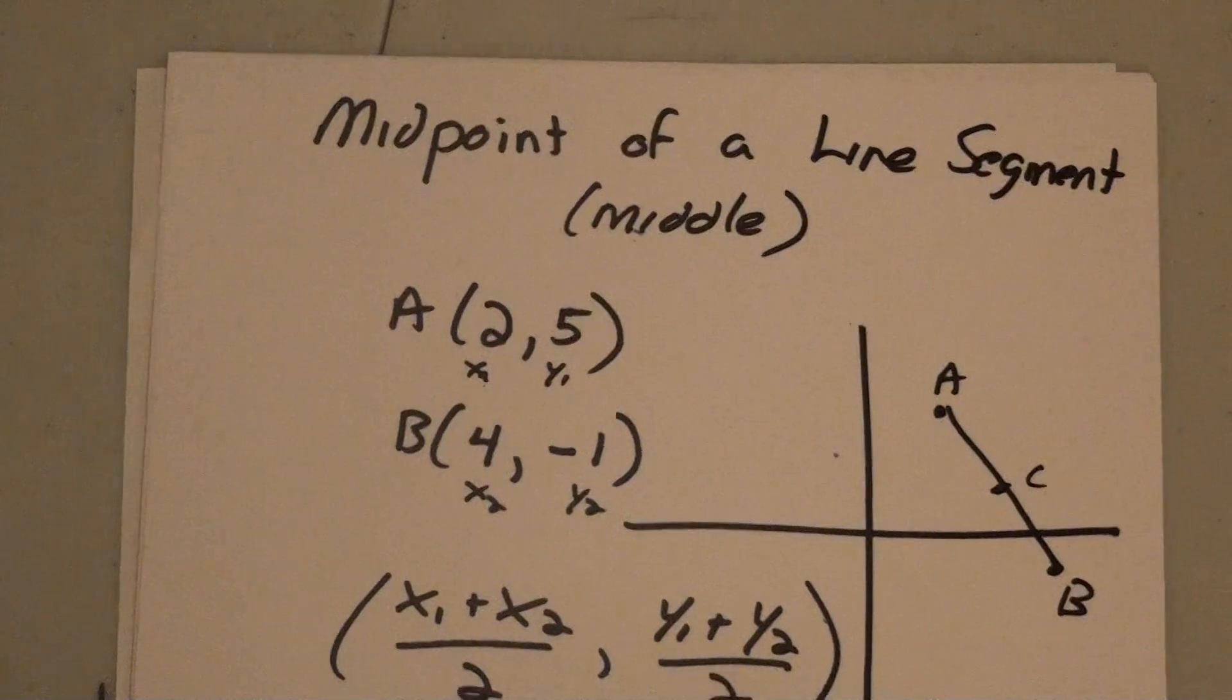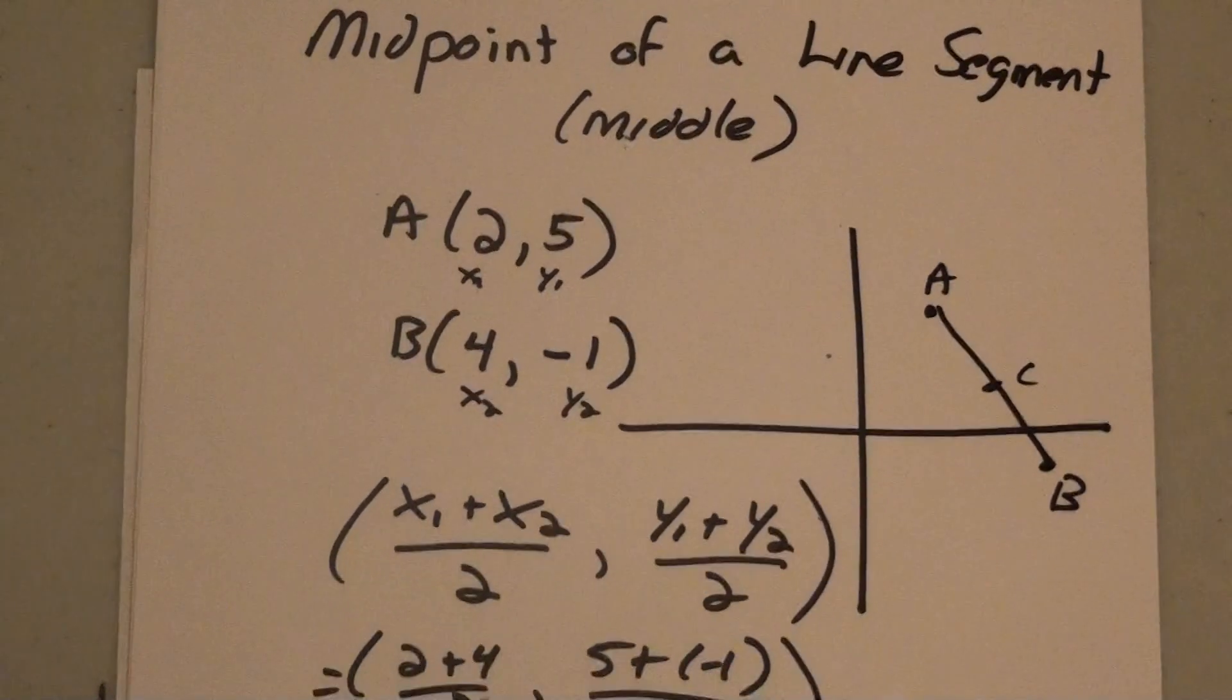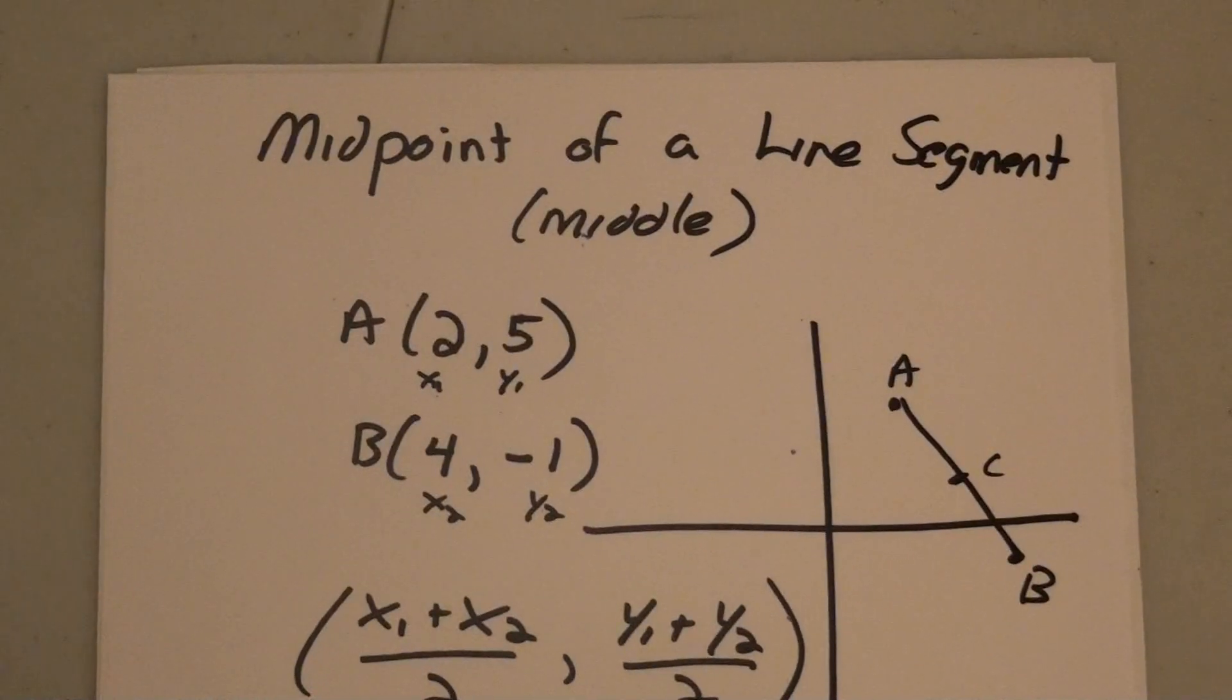Okay, that is the midpoint of a line segment. It's finding the middle. You're going to add your x values and divide by 2, and add your y values and divide by 2. This has been a short lesson brought to you by Energize Math. Please visit energizemath.com to download this note. Thank you very much.